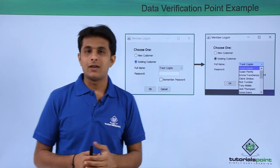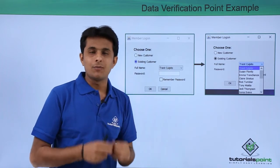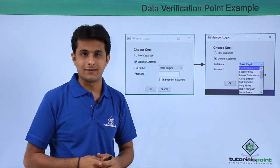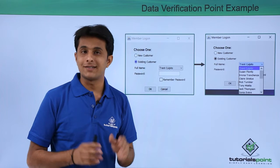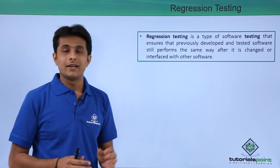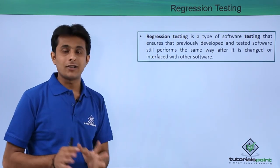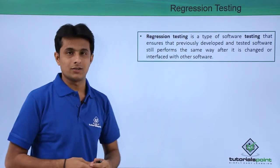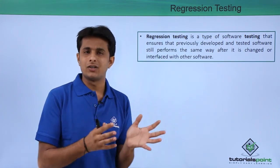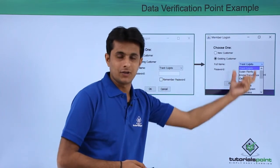Verification points keep track of a particular data field. If changes are made in one module, there's a high possibility those changes impact other modules — this is known as regression testing. Regression testing is a type of software testing that ensures previously developed software still performs the same way after modifications or integration with other software. It tracks changes such as added or deleted elements, or changes in height and width of the application.